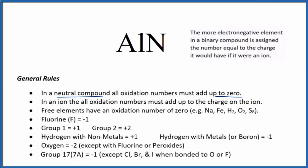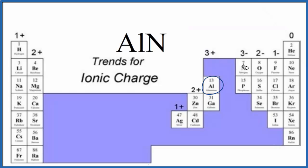If we look at the periodic table, we find aluminum and nitrogen. Nitrogen is closer to fluorine, nitrogen is more electronegative, and nitrogen has a three minus ionic charge. So our oxidation state will be minus three.